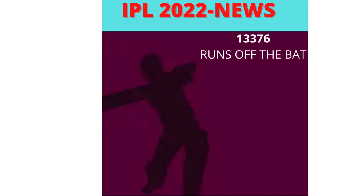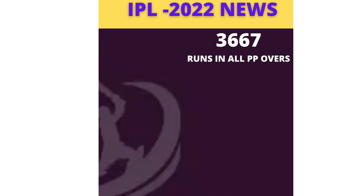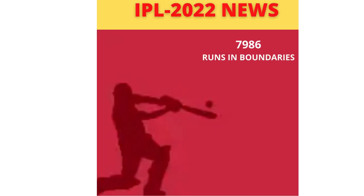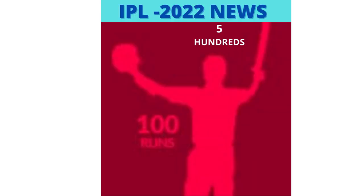Runs off the bat: 13,376. Runs in all powerplay overs: 3,667. Runs in boundaries: 7,986. Total centuries in IPL: 5.